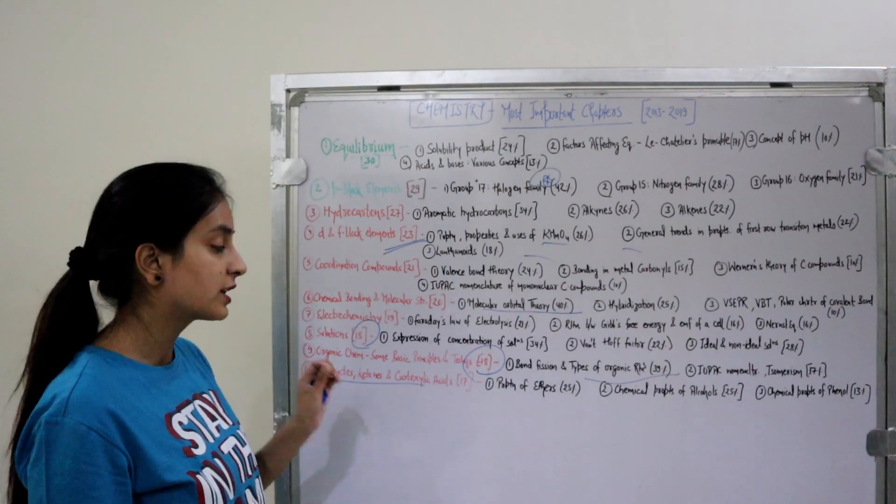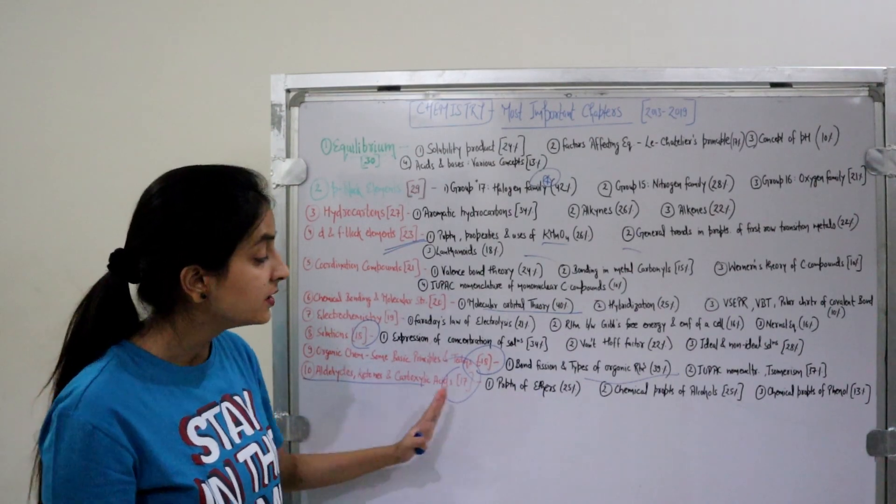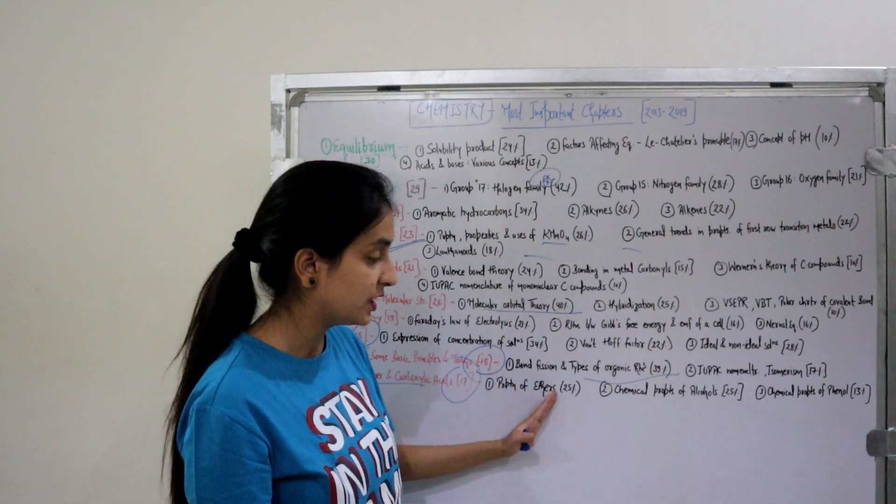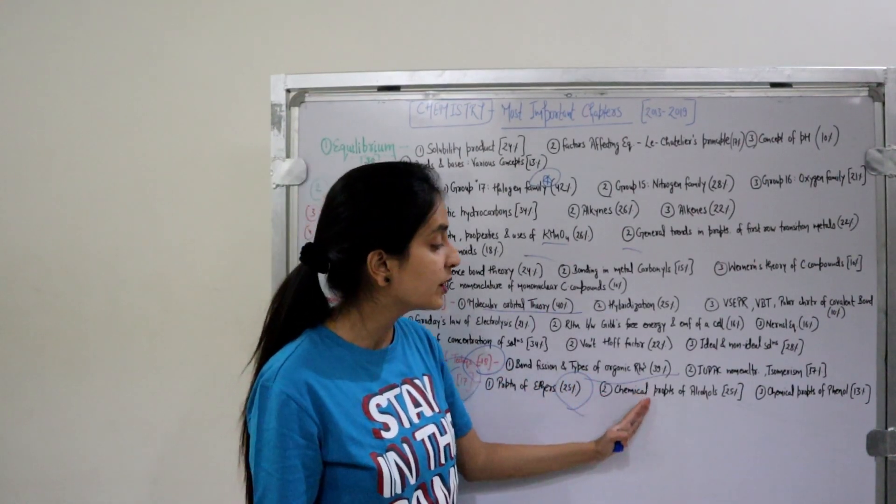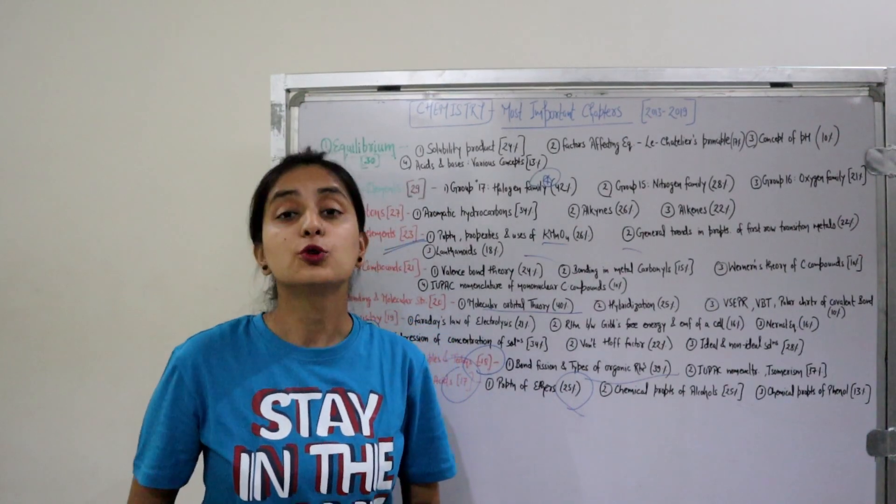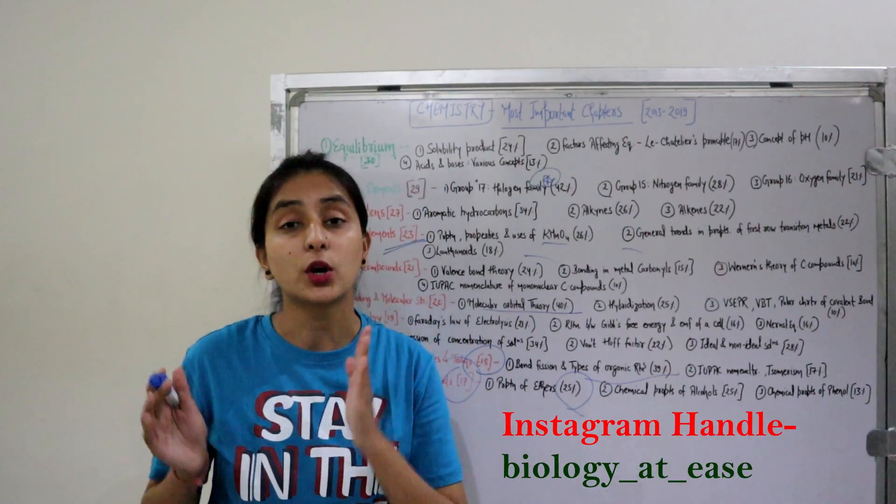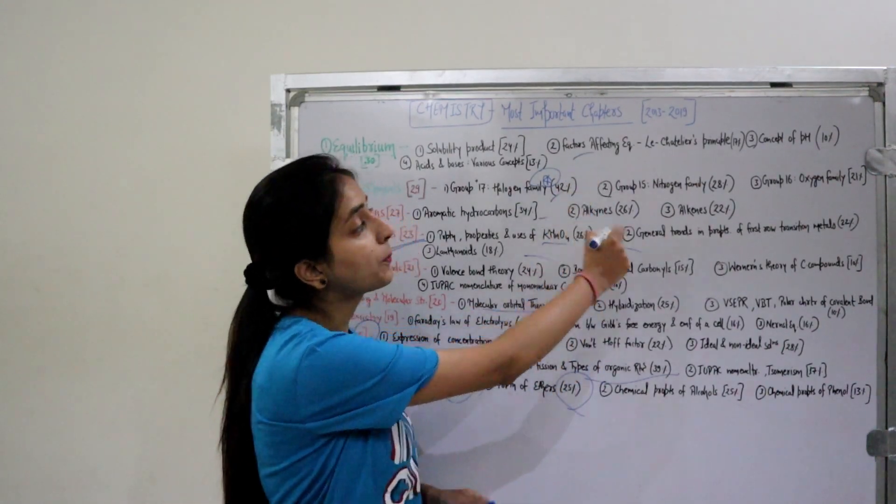The last chapter: Aldehydes, Ketones, and Carboxylic Acids—17 questions in the past 7 years from this whole chapter. Most important topics: Preparation of Ethers (25% questions from this topic), Chemical Properties of Alcohols, and Chemical Properties of Phenols. These are the 10 most important chapters in your chemistry section, and I have told you all the most important topics.